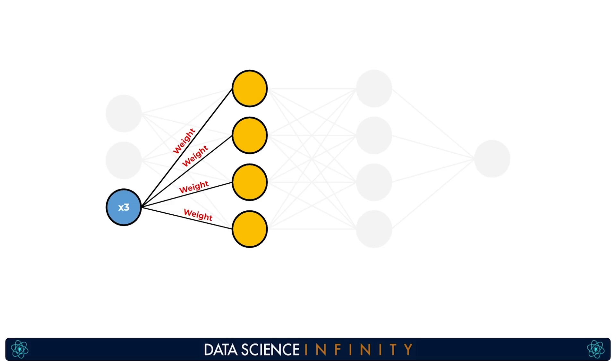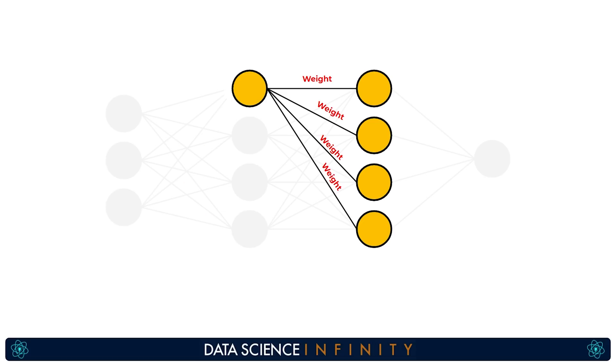There are also unique weight values between each of the neurons in all of our hidden layers and the same goes for the connections between the neurons in the final hidden layer and the neuron or neurons in the output layer, however many there are depending on whether it's a regression task like we see here with just one or a classification problem where there would be one for each class.